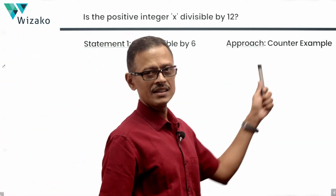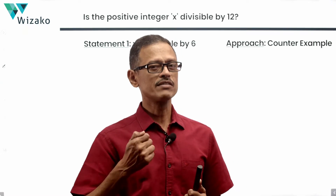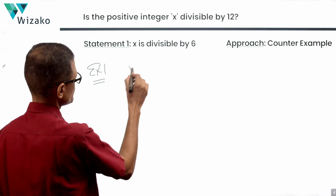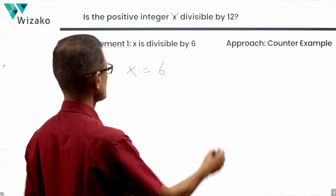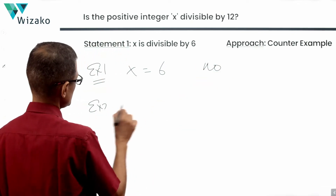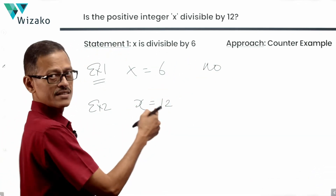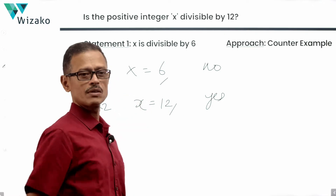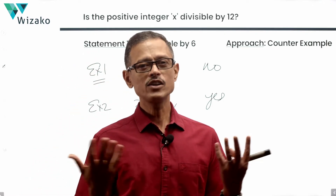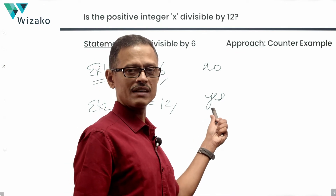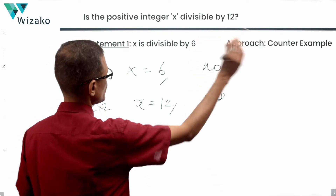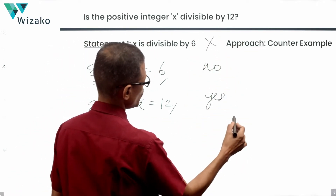Let's look at statement 1 alone: the number is divisible by 6. I'll use a counter-example. Example 1: x could be 6 itself — is 6 divisible by 12? No. Example 2: x could be 12 — is 12 divisible by 6? Yes. Is 12 divisible by 12? Yes. So if a number is divisible by 6, it may or may not be divisible by 12. We don't have a conclusive answer, so statement 1 alone is not sufficient.